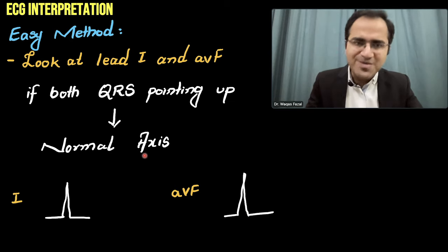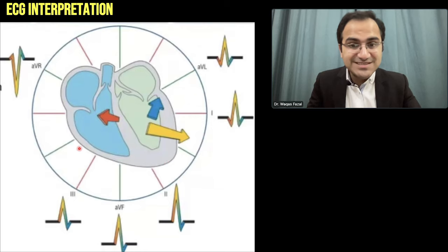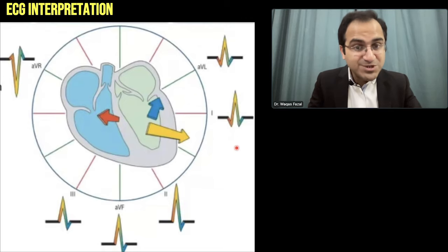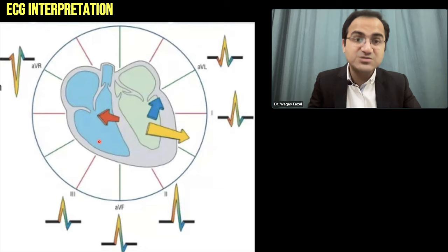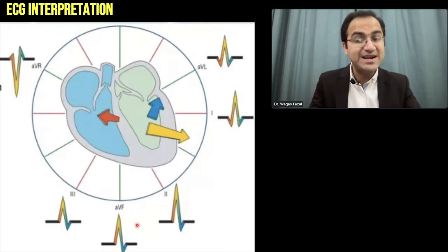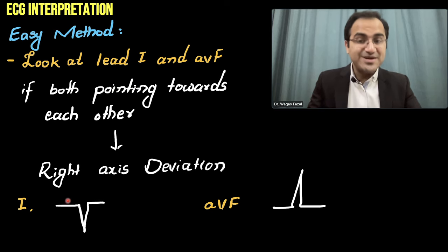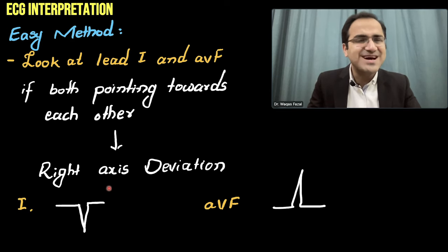If the axis deviates to the right side, the current flows away from Lead I, so Lead I will show a negative deflection. Lead aVF will show positive deflection because the vector is in its direction. So if Lead I is showing negative deflection and Lead aVF is showing positive deflection, that is called right axis deviation.